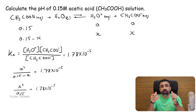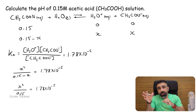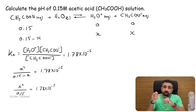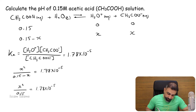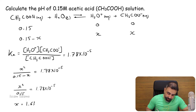When we do cross multiplication and then take the square root of the answer, x is going to be equal to 1.634 times 10 to the power minus 3.